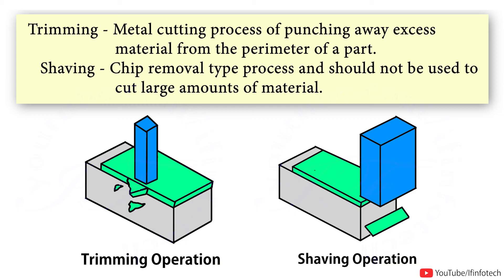Shaving is a secondary metal cutting process that can be used to improve the edge of cuts that have already been made. Shaving uses very little clearance to perform straight, smooth, accurate cuts to only the end of the edge. Shaving is a chip removal type process and should not be used to cut large amounts of material.